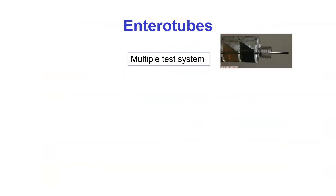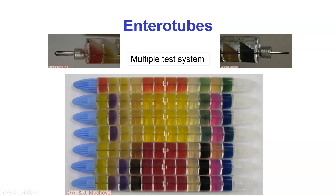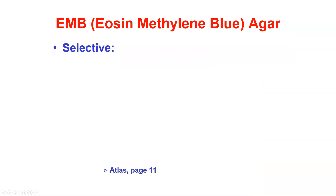We also have the Enterotube system, which is a multiple test system. Removing the white cap reveals a needle you can pick up your bacterium on; under the blue cap is a hook. Pulling the hook pulls the needle through the center of the tube, then you push it back and break it off — we have a separate video showing how to do this. The Enterotube is considered a multiple test system because it gives 15 different results in 11 different compartments.